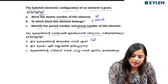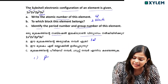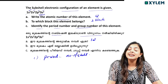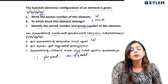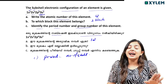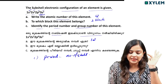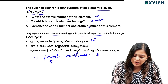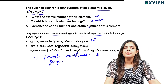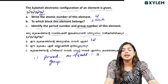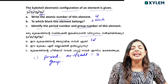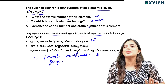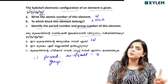Identify the period number and group of this element. The period number is 3, because there are three shells. There are two electrons in the last subshell, so the group number is 2.